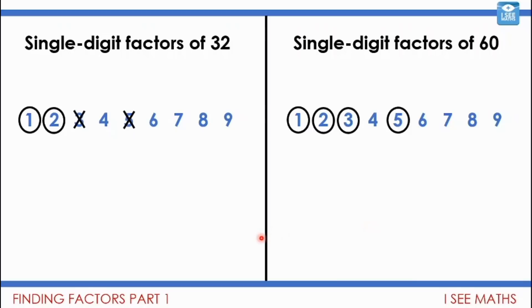Now, moving on, well, what about 3? I know that 3 isn't a factor of 32. Because 10 lots of 3 is 30. 11 lots of 3 is 33. So 32 isn't a factor. But I know that 3 is a factor of 60. 10 lots of 3 is 30. 20 lots of 3 must be 60. So that one, I know, is.